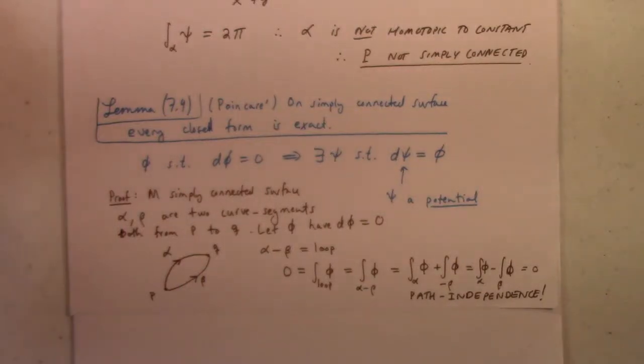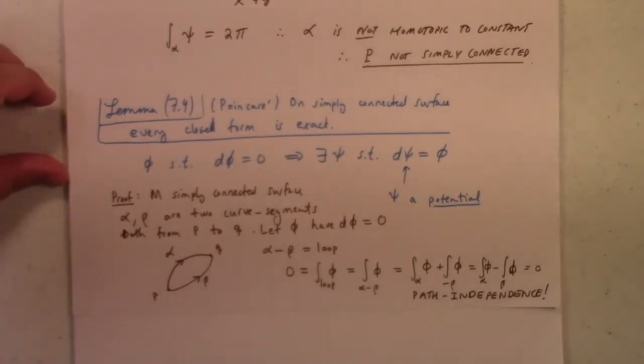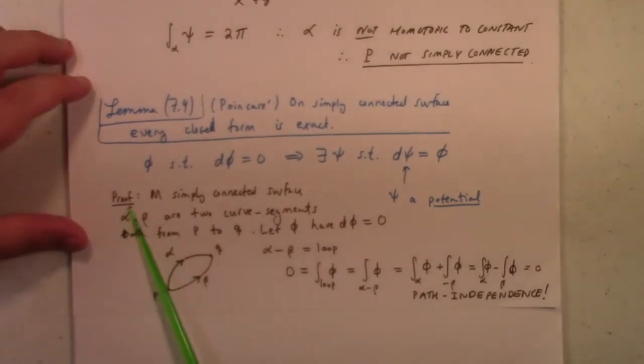Okay, so on second thought, I decided I would give you the proof and say a word or two about manifolds, since I said I would. So here's the deal. On a simply connected surface, if you have alpha and beta are two curved segments, both from P to Q, and you have a closed form, one form, so d phi is zero.